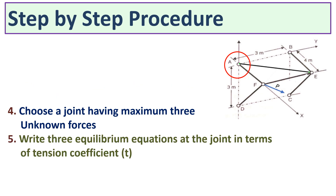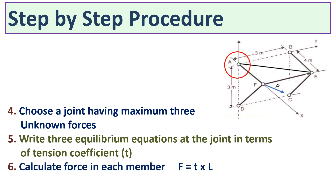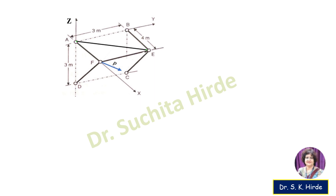After choosing the joint with three unknown forces, we apply equilibrium conditions: summation Fx = 0, summation Fy = 0, and summation Fz = 0. This gives us the tension coefficients in all the members. The last step is to calculate the force in each member: force equals tension coefficient multiplied by the length of that member.